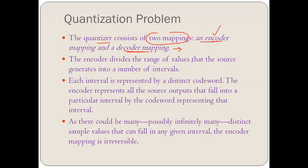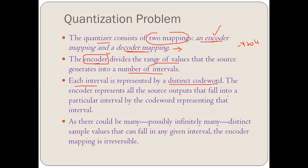The encoder divides the range of values that the source generates into a number of intervals. As seen in the earlier example, we took minus 4 to 4, and the encoder generated intervals like minus 4 to minus 3, minus 3 to minus 2, and so on. Each interval is represented by a distinct code word, and all source outputs falling into a particular interval are represented by the code word for that interval.